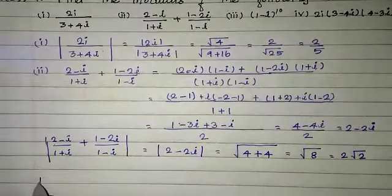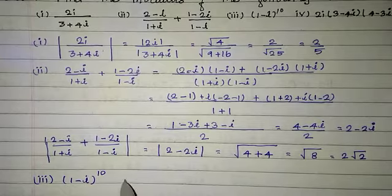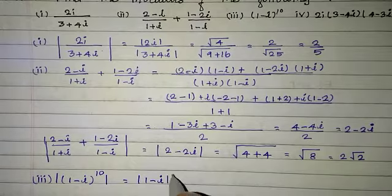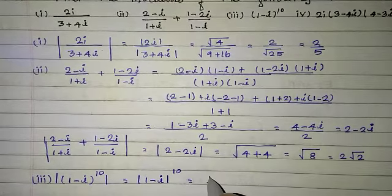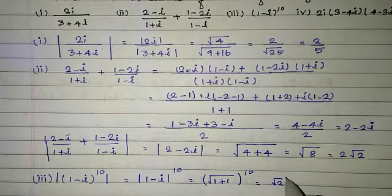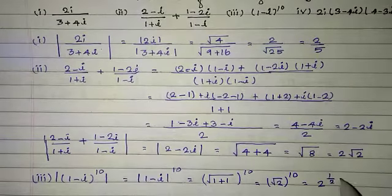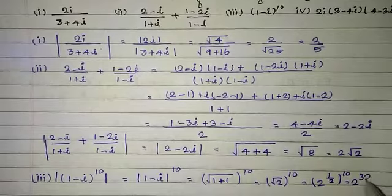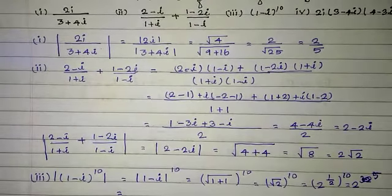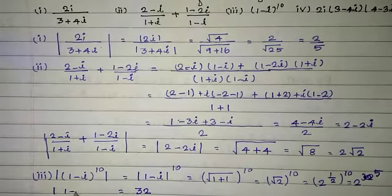Third sum: modulus of (minus 1 minus i by 2) whole power 10, which equals modulus of (minus 1 minus i) whole power 10. This equals root of (real part squared plus imaginary part squared) whole power 10, so (root 2) whole power 10, which can be written as 2 to the power of 1/2, whole power 10, giving 2 to the power 5, which equals 32.